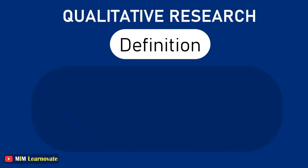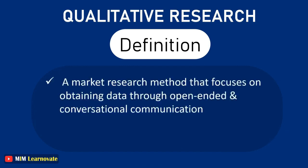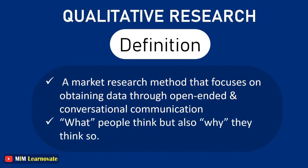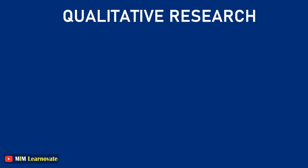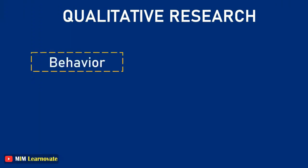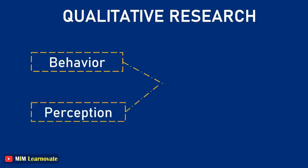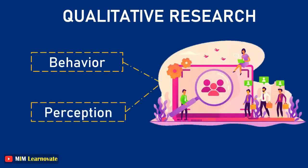Definition of qualitative research: Qualitative research is defined as a market research method that focuses on obtaining data through open-ended and conversational communication. This method is not only about what people think but also why they think so. Qualitative research methods are designed to help reveal the behavior and perception of a target audience with reference to a particular topic.